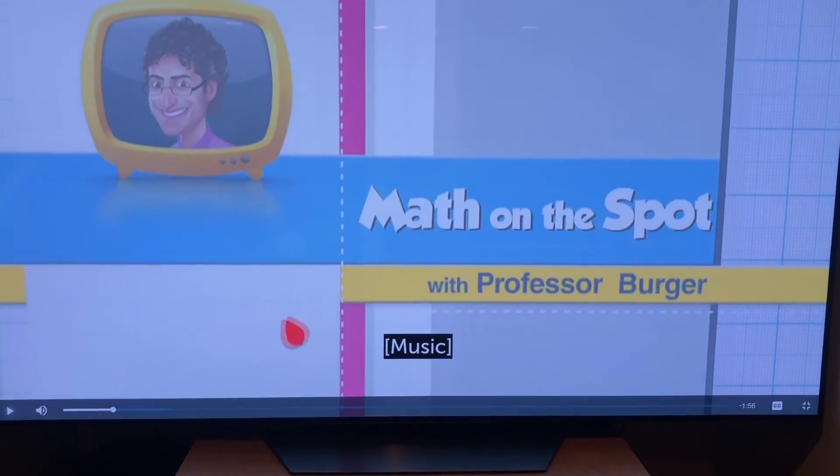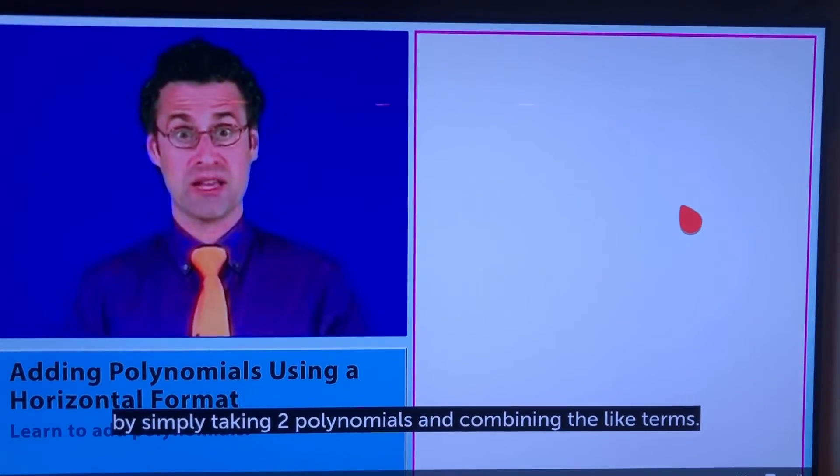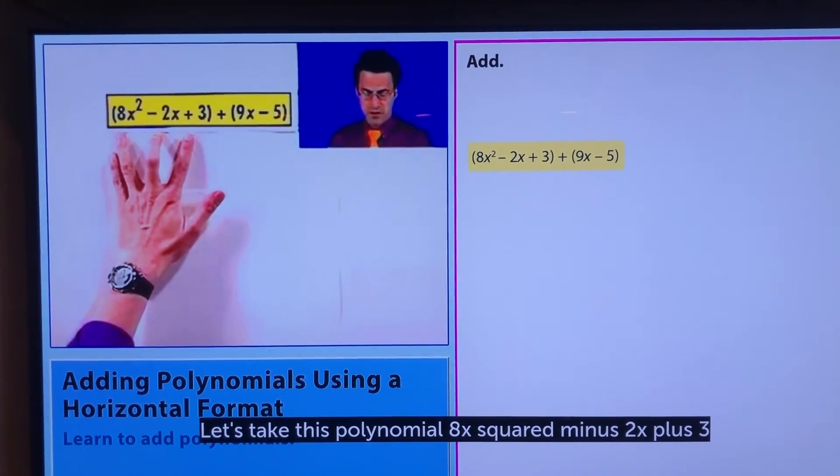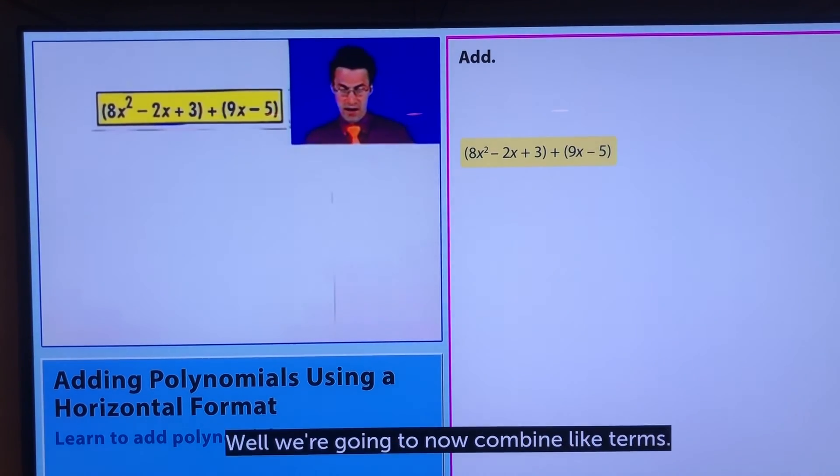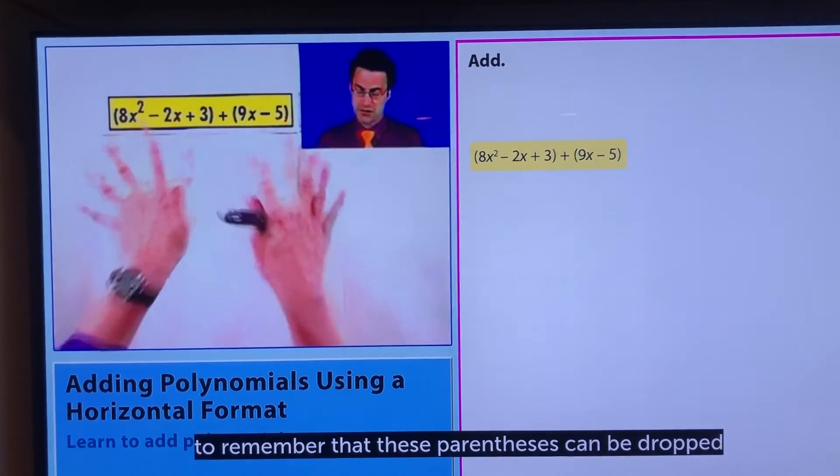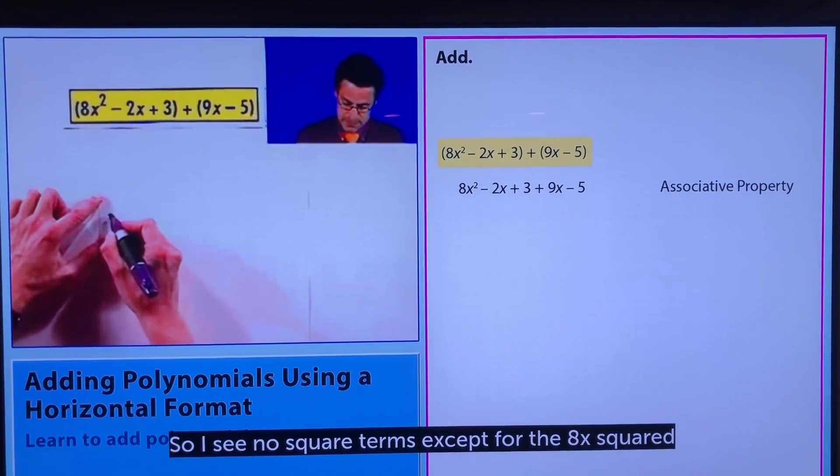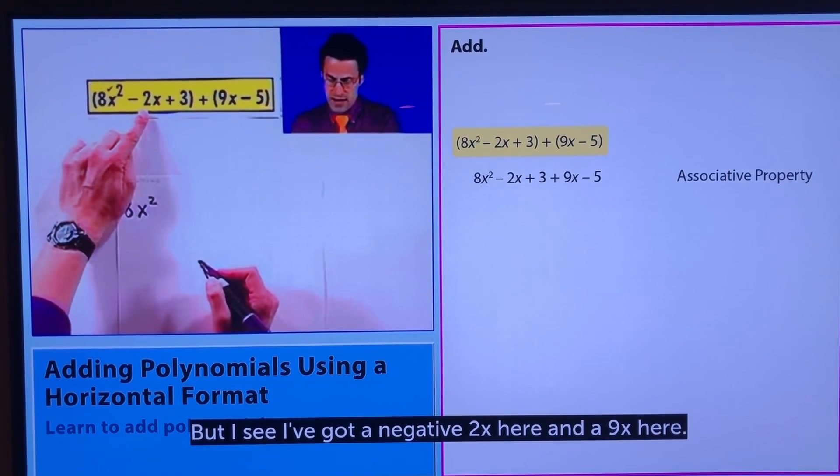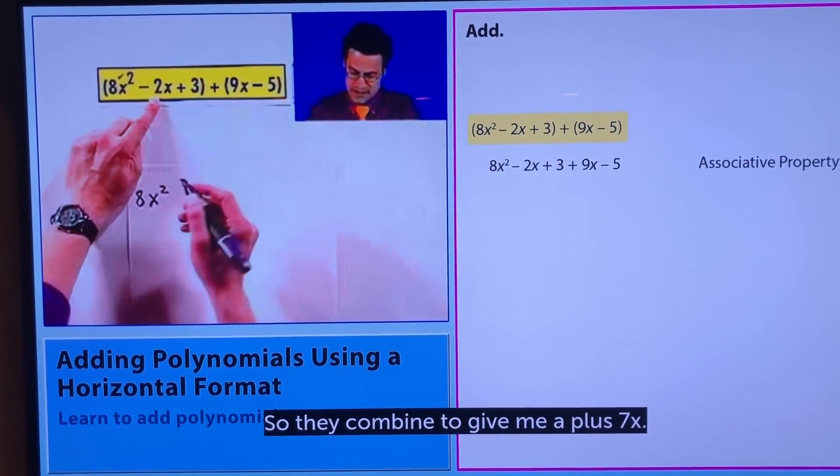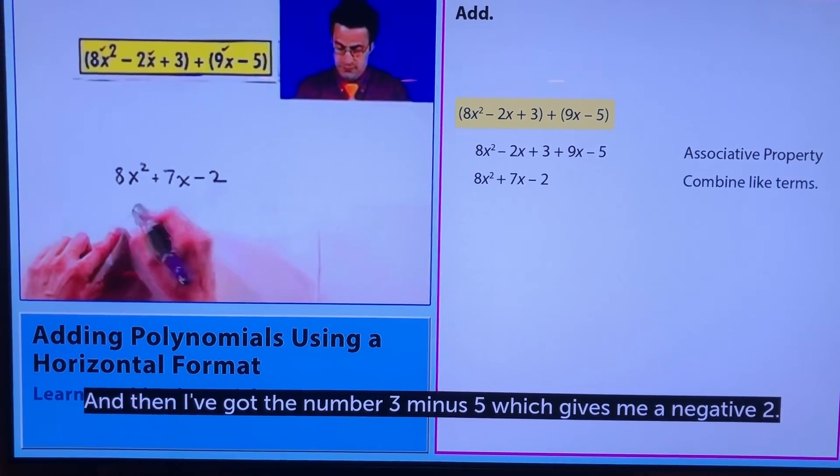We can actually add polynomials together by simply taking two polynomials and combining the like terms. Let's take with an example. Let's take this polynomial 8x squared minus 2x plus 3 and add it to the polynomial 9x minus 5. What would we get? Well we're gonna now combine like terms. We can actually use the associative property to remember that these parentheses can be dropped and I can add them sort of any way I want and I can move the terms around by the commutative property. So I see no square terms except for the 8x squared, so that takes care of that term. I check them off. But I see I've got a negative 2x here and a 9x here so they combine to give me a plus 7x. And then I've got the number 3 minus 5 which gives me a negative 2. So there is the sum of those two polynomials, just combining like terms.